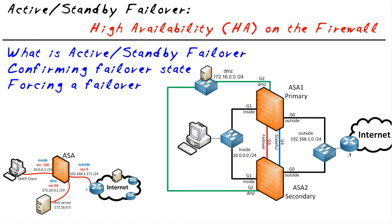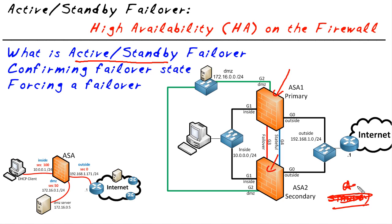In this micro nugget, we took a look at the concept of Active Standby Failover — one device active, the other standby. If there's a problem or the active device gets rebooted, the role can switch and the standby becomes active to take over forwarding traffic. We also confirmed failover state with 'show failover,' and forced a failover by rebooting the primary. The secondary didn't see poll responses and went active. I hope this has been informative, and thank you for viewing.